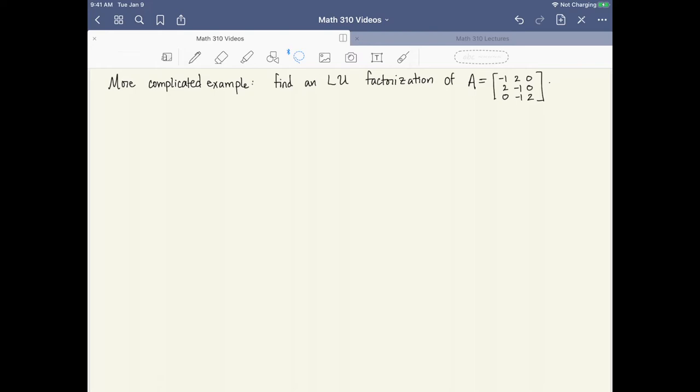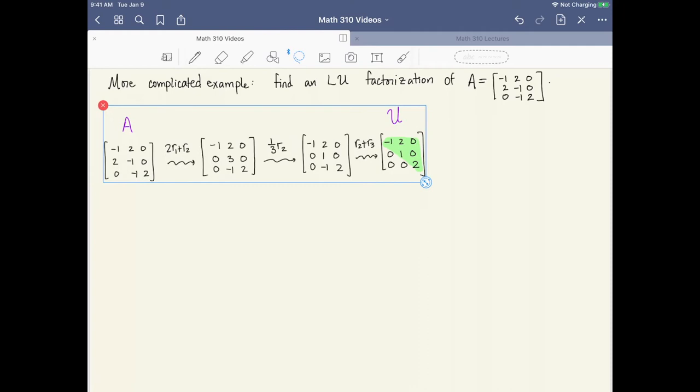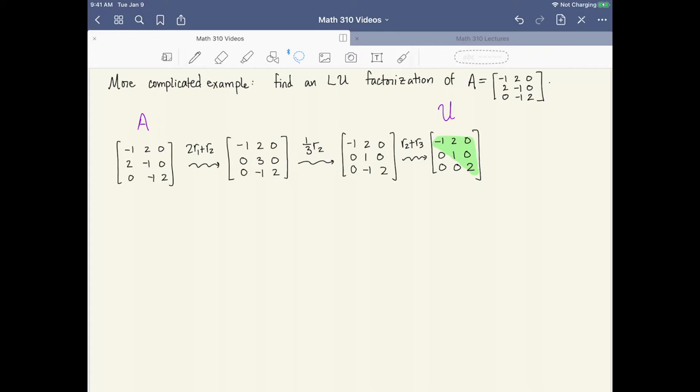So we're going to find an LU factorization of the 3 by 3 matrix A given here. So the first step is to transform A into an upper triangular matrix and I have the three row operations that are going to be required already worked out. The first row operation is designed to take the pivot -1 and to use it to eliminate the 2 underneath it. So that row operation is 2 row 1 plus row 2 into row 2. After this we multiply one third row 2 in order to turn this 3 into a 1. And then the last row operation is to use the 1 that occurs in the middle of the matrix to eliminate the -1 underneath it. So that row operation would be row 2 plus row 3 into row 3. Performing these three row operations will transform A into an upper triangular matrix that we're going to call U.